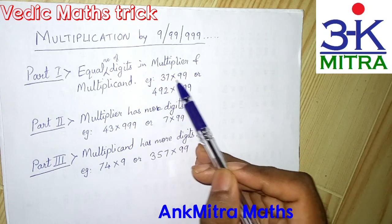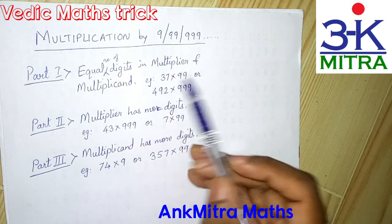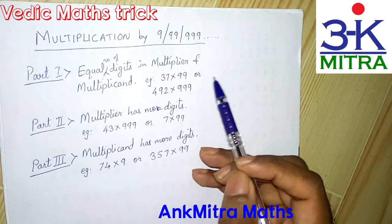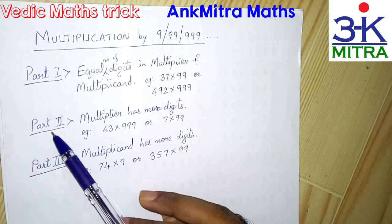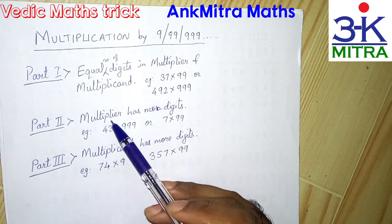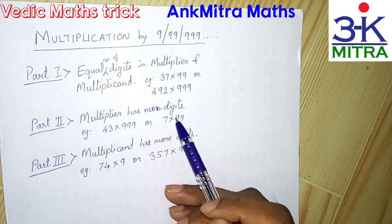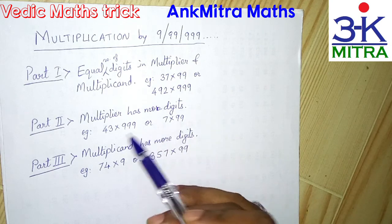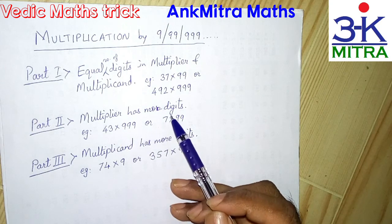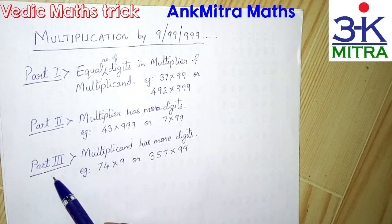Examples for part one are like a two-digit number multiplied by 99, or a three-digit number multiplied by 999, or a one-digit number multiplied by 9, or a four-digit number multiplied by 9999. In part two, that is the next video, I will be showing you the procedure where the multiplier has more number of digits — that is a single-digit number multiplied by 99 or 999, or a two-digit number multiplied by 999 or 9999.